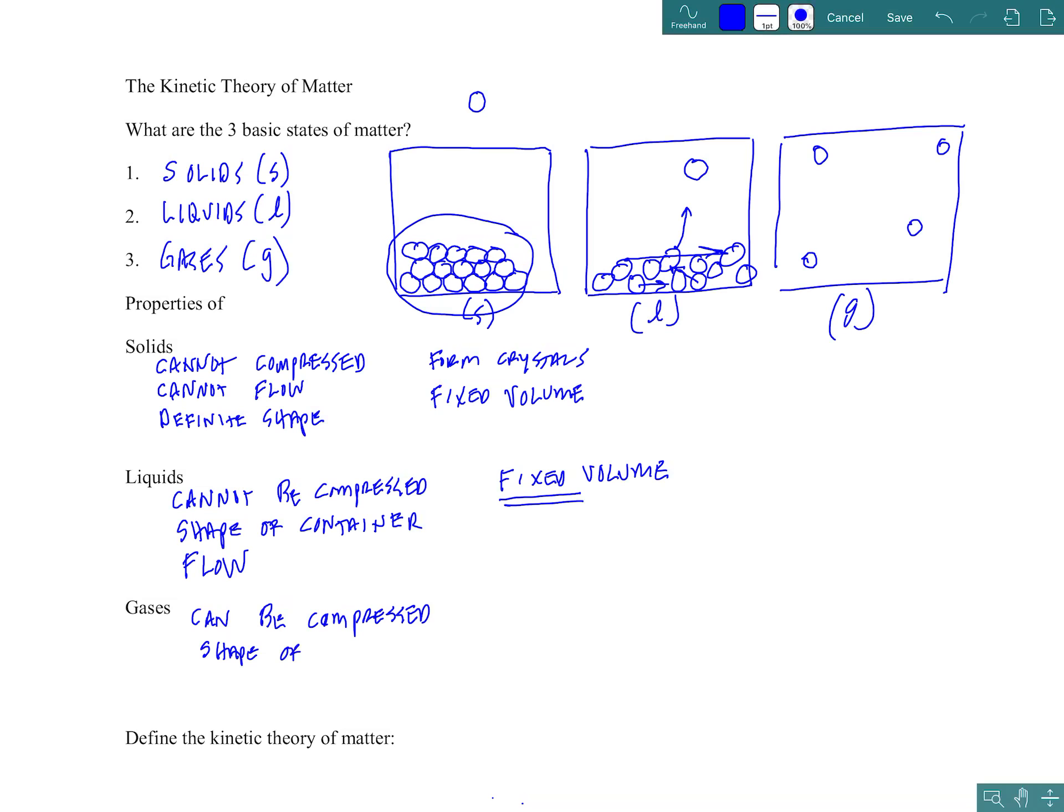Like liquids, gases can take the shape of their container. Gas particles can flow past one another. So, this gas particle can flow throughout its container. This one can flow as well. They can move past one another. Gas particles can flow.